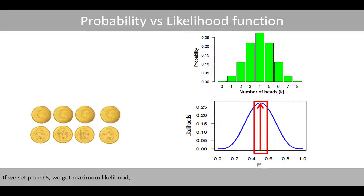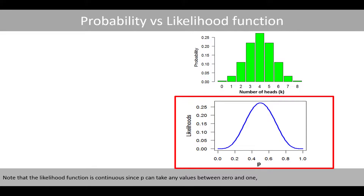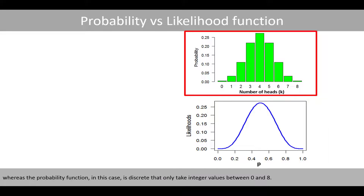If we set p to 0.5, we will get maximum likelihood, given that we have observed four heads out of eight trials. Note that the likelihood function is continuous since p can take any value between 0 and 1, whereas the probability function in this case is discrete and can only take integral values between 0 and 8.